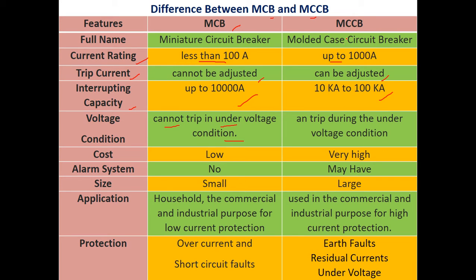Under voltage trip conditions: under-voltage tripping cannot be done with MCB, whereas MCCB can trip during under-voltage conditions. Regarding cost, MCB is cheaper compared to MCCB, which is very expensive in comparison. For the alarm system, there is no alarm system available with MCB; however, with newer versions of MCCB, an alarm system may be included.